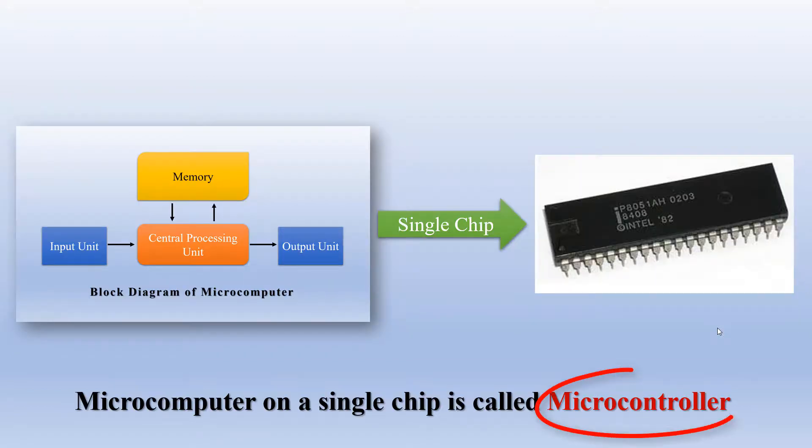Now we come down to the concept of the microcontroller. How it is different from microprocessor? The microprocessor is a central processing unit on a single chip, while when we talk about microcontrollers, they are the whole microcomputers on a single chip. So the input unit is also incorporated, the output unit is also incorporated, the memory is there and the central processing unit there.